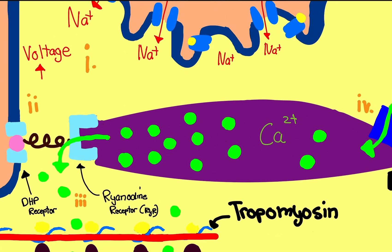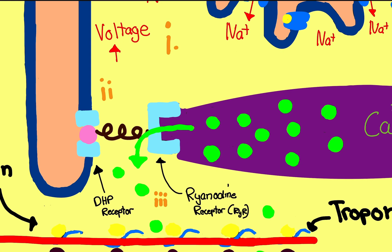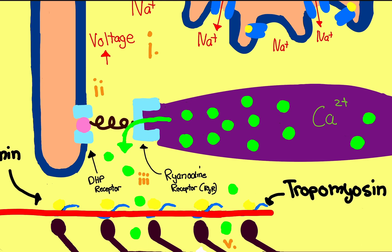This ryanodine receptor is actually attached to the sarcoplasmic reticulum. The sarcoplasmic reticulum is just a fancy way of saying endoplasmic reticulum — since it's part of the muscle cell, they renamed it. It holds calcium inside; it's a calcium storage center. When the voltage goes up, it signals the DHP receptor, which gets excited and pulls on the ryanodine receptor via the chain, opening it up. Calcium then rushes out of the sarcoplasmic reticulum.